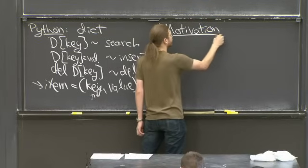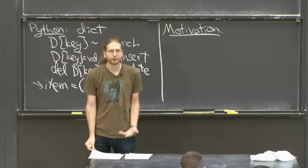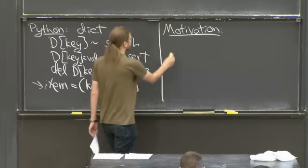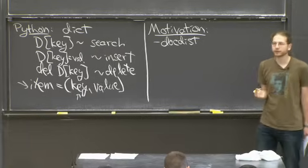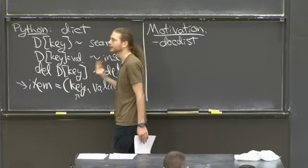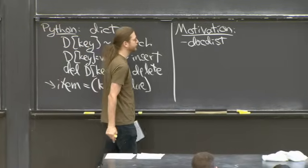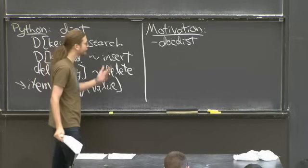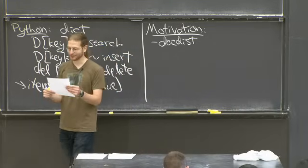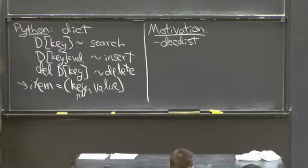One obvious motivation for building dictionaries is you need them in Python. People use them all the time — we used them in DocDist. All of the fastest versions of the document distance problem used dictionaries for counting words and computing inner products. Dictionaries are built into basically every modern programming language: Python, Perl, Ruby, JavaScript, Java, C++, C# — all have some version of dictionaries, all running in basically constant time using the stuff in this lecture and the next two lectures.